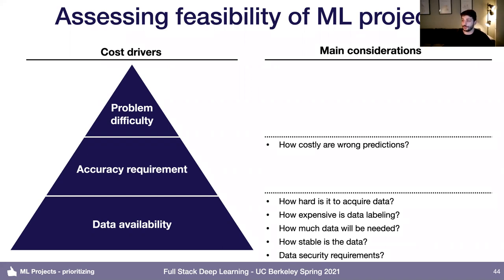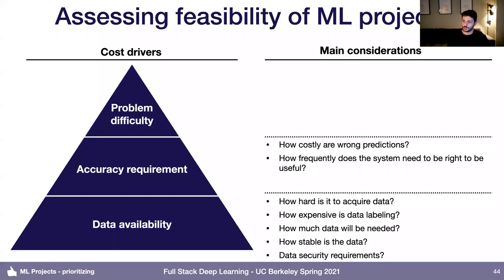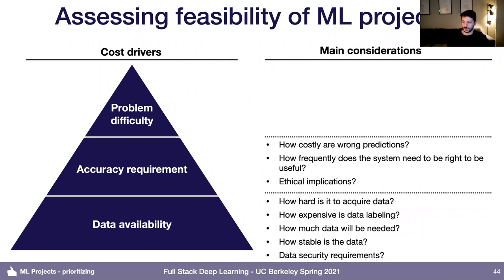For accuracy requirements, the main drivers are how costly wrong predictions are. If you're building a self-driving car, wrong predictions can be catastrophic. If you're building a recommender system, a wrong prediction might just slightly annoy a user. If wrong predictions are expensive, that really drives up project cost. Also consider how frequently the system needs to be right to be useful — getting one right recommendation out of every ten is a lot easier to build than a system where users log out in disgust if they see one wrong prediction. And consider the ethical implications of your model's accuracy, such as concerns about fairness or differentiated value to different classes of users.